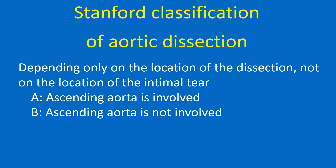Stanford classification of aortic dissection depends only on the location of the dissection, not on the location of the intimal tear. Type A: the ascending aorta is involved. Type B: the ascending aorta is not involved.